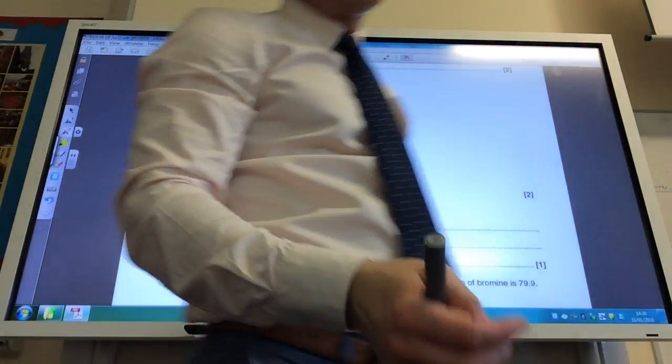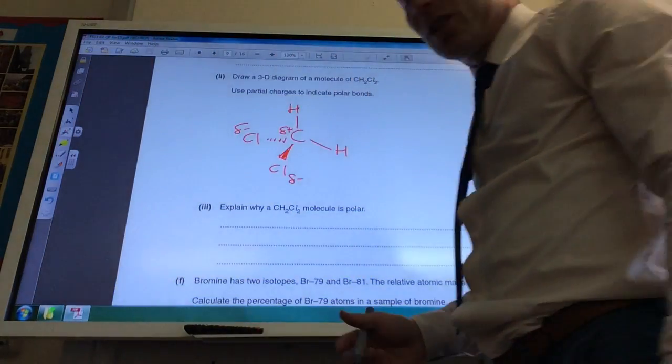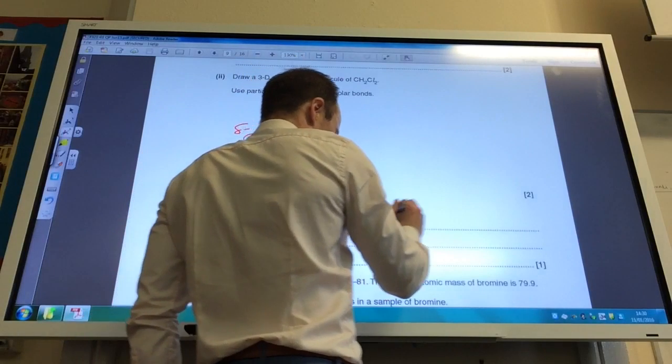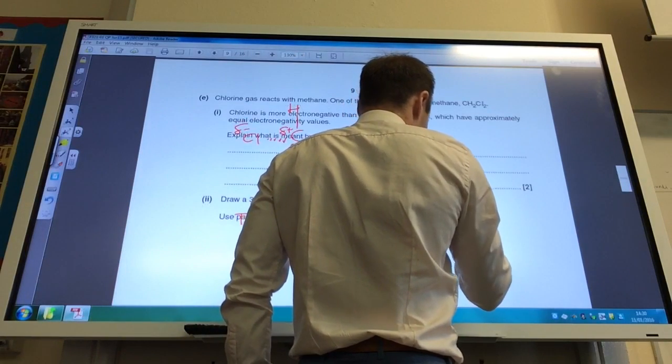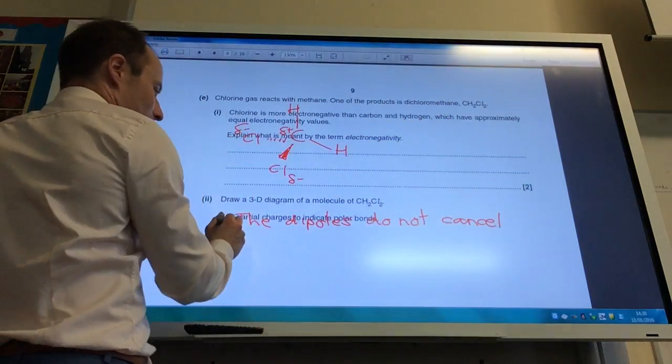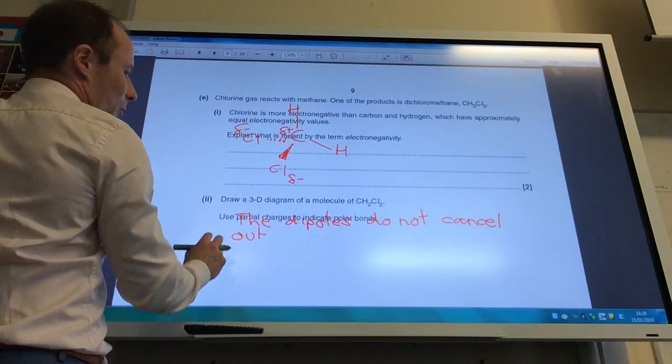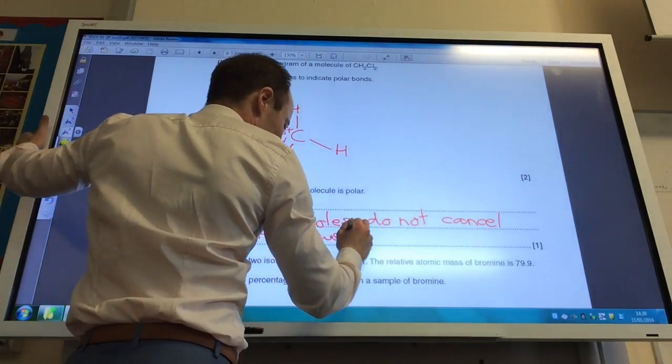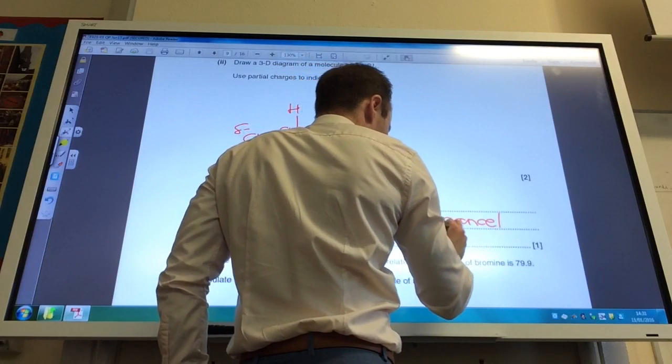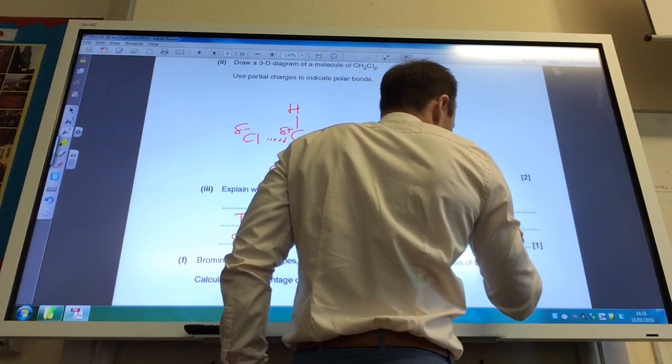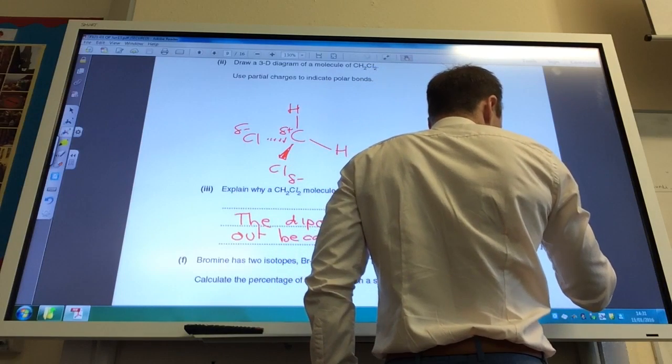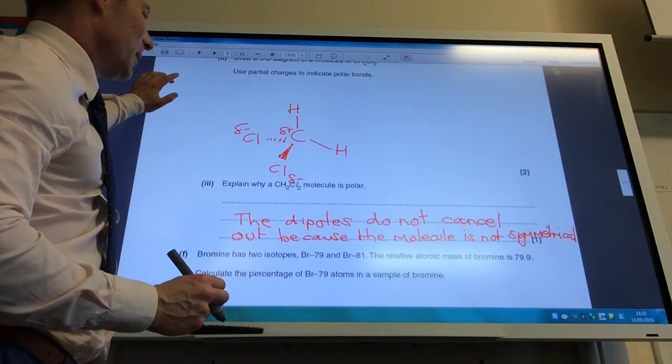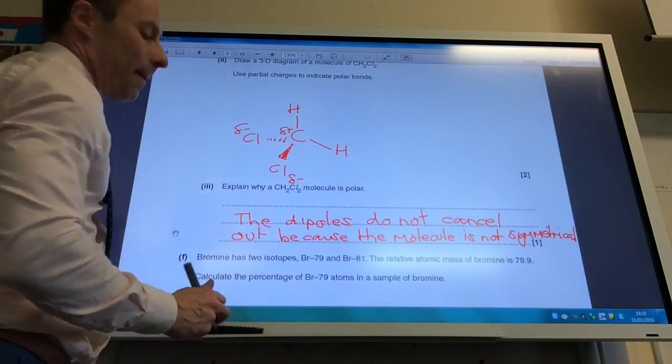So why is the CH2Cl2 molecule polar? It's because the dipoles do not cancel out. So this is well worth remembering. The dipoles do not cancel out. It's because the molecule is not symmetrical. Whenever they talk about that, always talk about the molecule not being symmetrical.